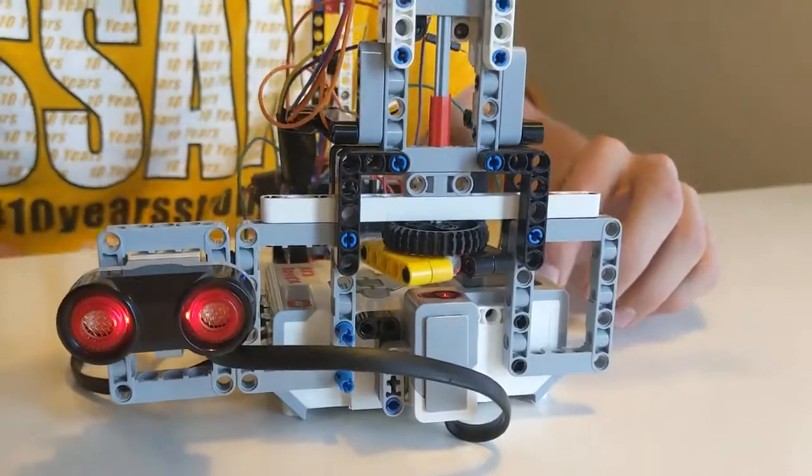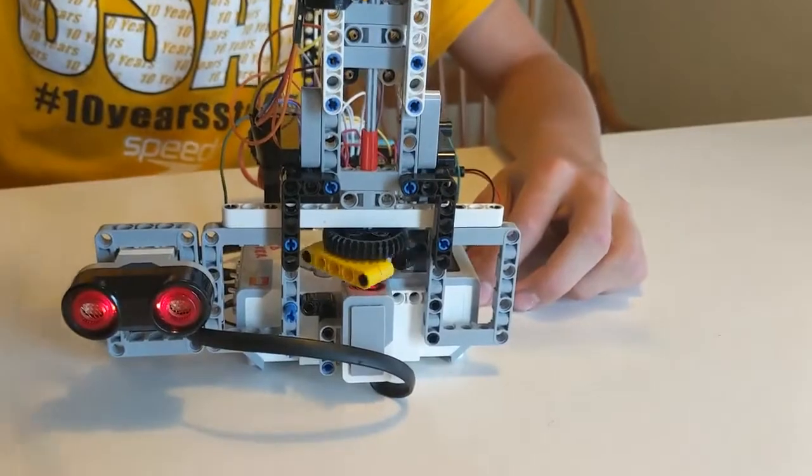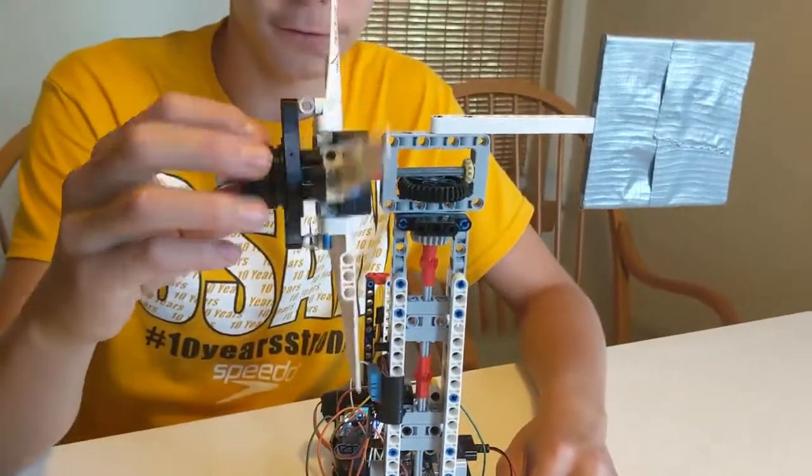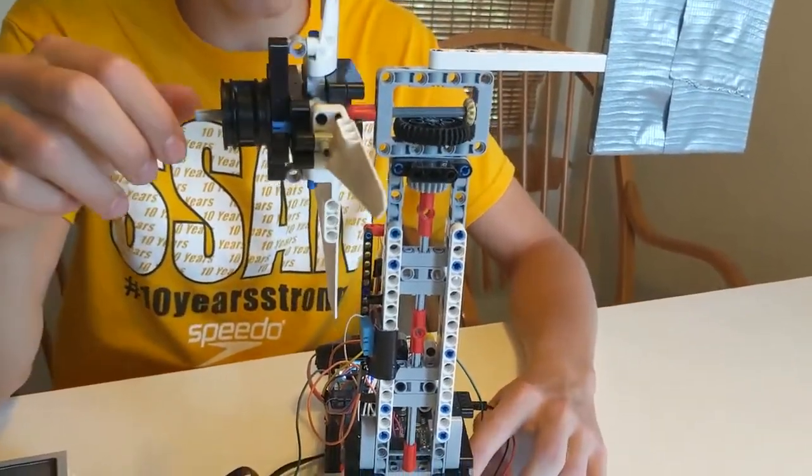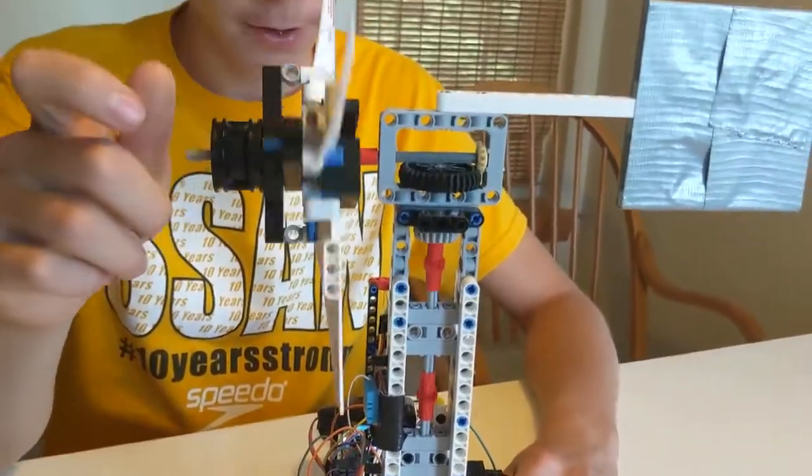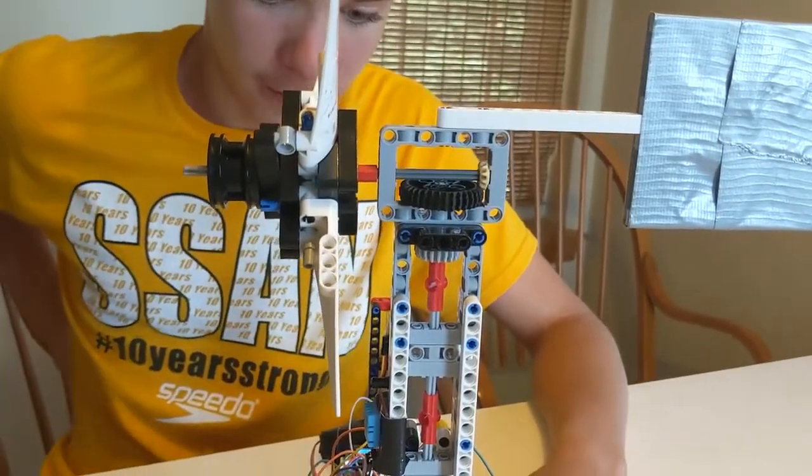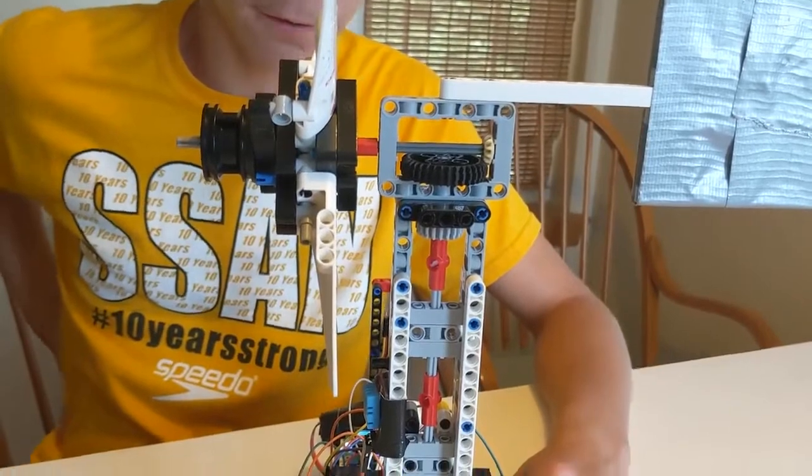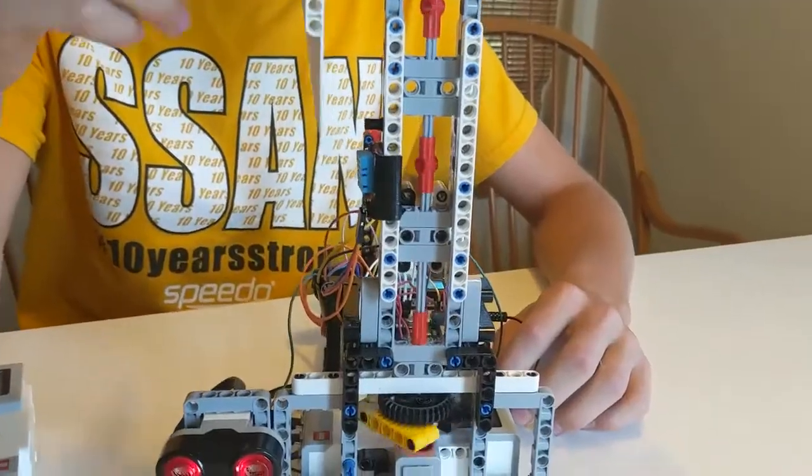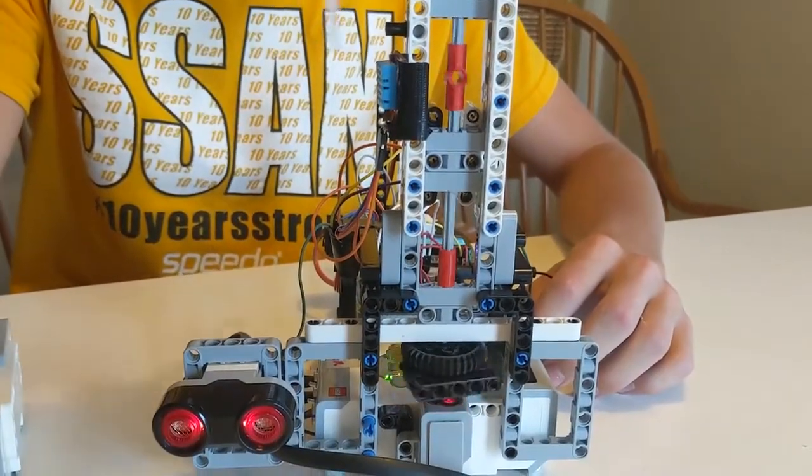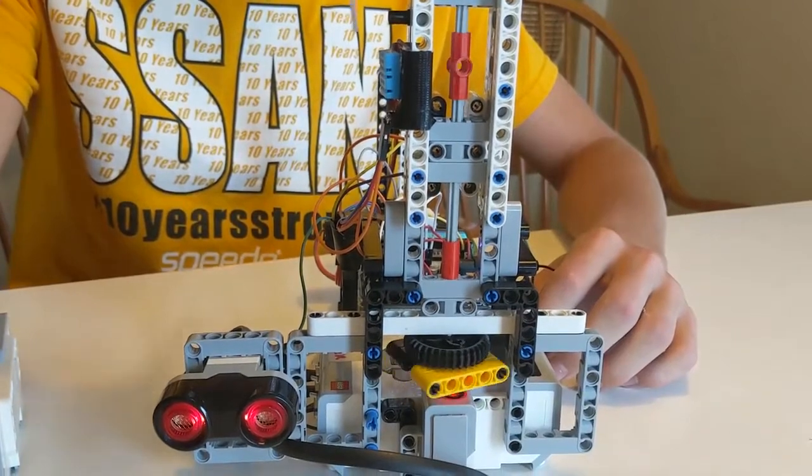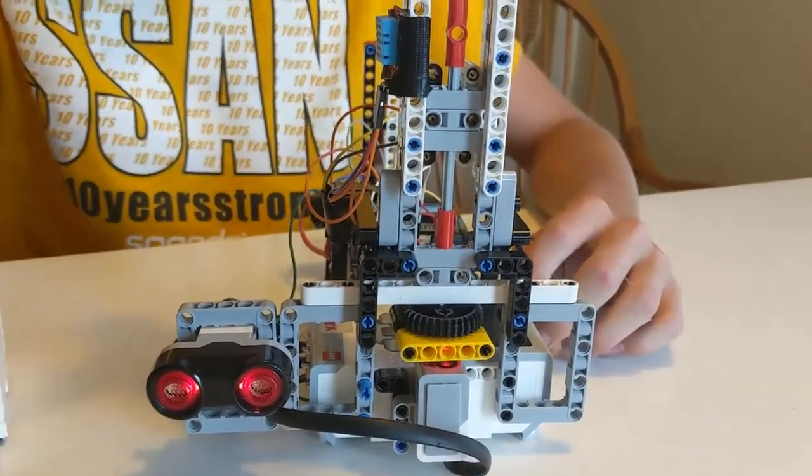To calibrate the anemometer, you hold it out the window of a car and count how many revolutions per minute it does. I wrote a simple program on the EV3 to do this for me. It turns out, in a one mile an hour wind, it does about 30 revolutions per minute. I simply divide the rotations per minute of the wind turbine by 30, and that's the wind speed.